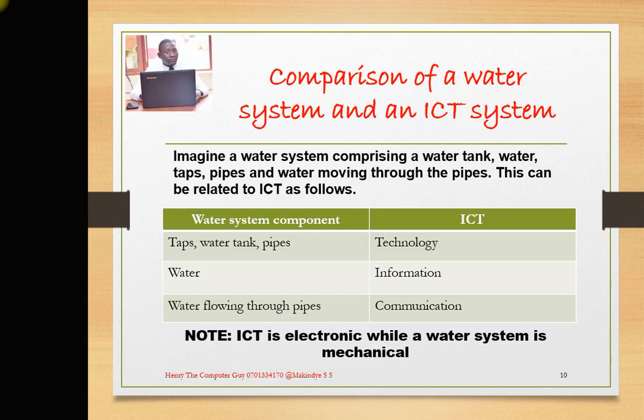They are telling us that ICT is electronic, while a water system is mechanical. That means ICT is an electronic component — we need power. To use the components, they have to be powered, either using electricity or battery. They are electronic, they use electricity. Whereas a water system is mechanical.